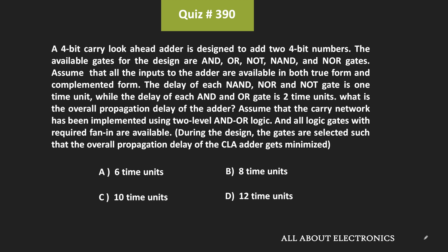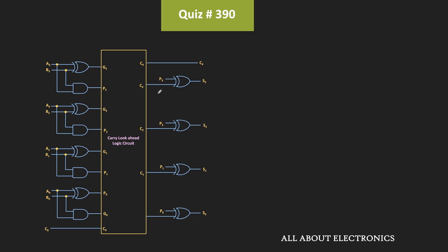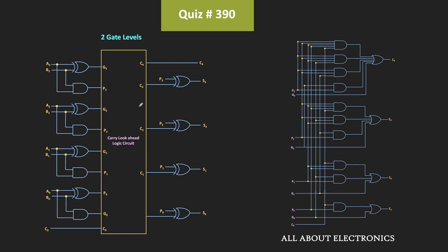Welcome to the YouTube channel all about electronics. In this question, a 4-bit carry lookahead adder is designed to add two 4-bit numbers, and we need to find the overall propagation delay. The carry network is designed using AND-OR logic implemented in two gate levels. The carry propagation and generation coefficients can use any of the five gates. The propagation delay of the AND and OR gate is two time units, while the NOT, NAND, and NOR gate is one time unit.